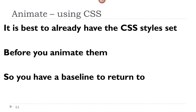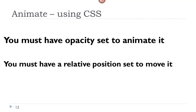One thing about animating CSS properties: it is a good idea to already have that CSS style set before you animate them, so that you have a baseline to return to. If you are going to grow something to 1.5em and want to reverse it, you need to know where you started from. A must: if you are going to animate opacity from low to high, that low value already has to be set in your CSS, or else you can't animate it.